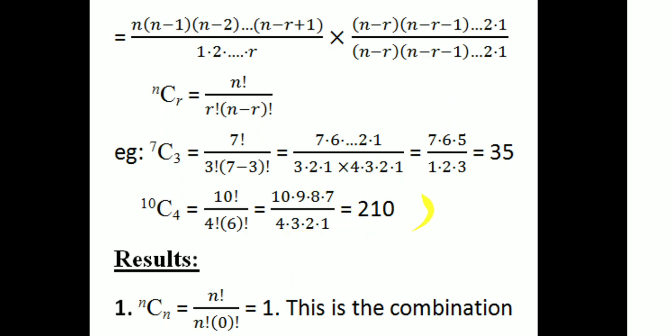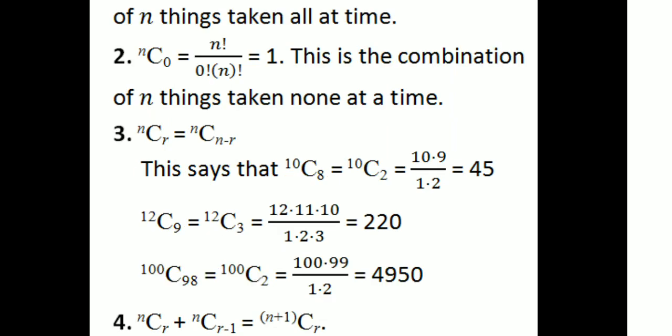nCn = n factorial divided by n factorial into (n minus n) factorial = n factorial divided by n factorial into 0 factorial = 1, since 0 factorial is 1. So nCn equals 1 — this is the combination of n things taken all at a time. Also, nC0 = n factorial divided by 0 factorial into n factorial = 1. This is the combination of n things taken none at a time. So all at a time gives combination 1, and none at a time gives combination 1.